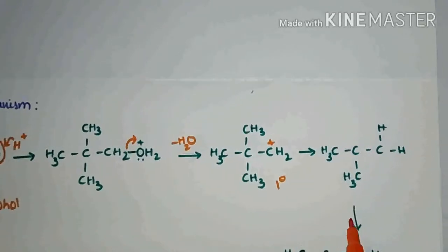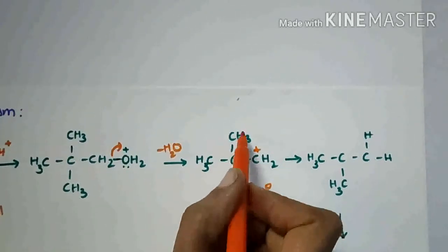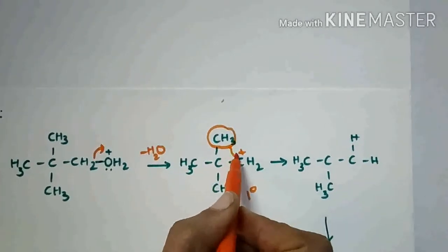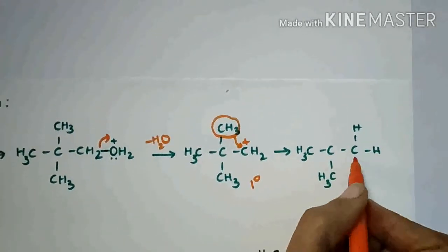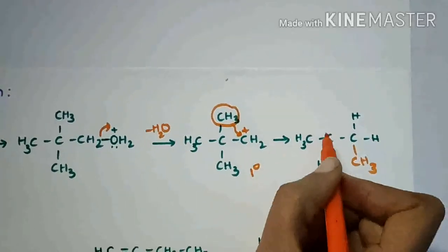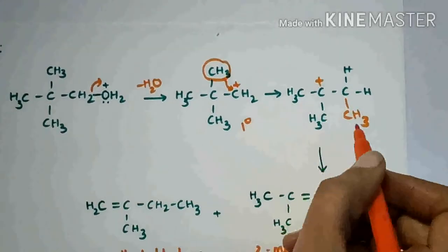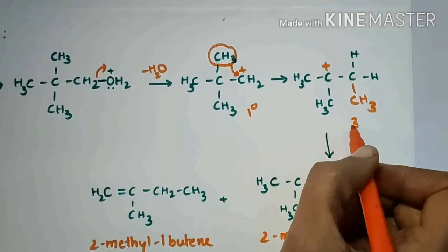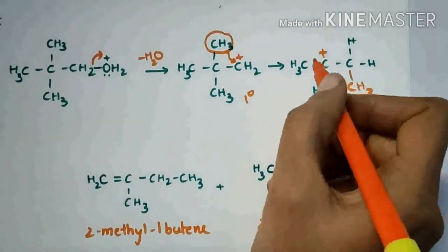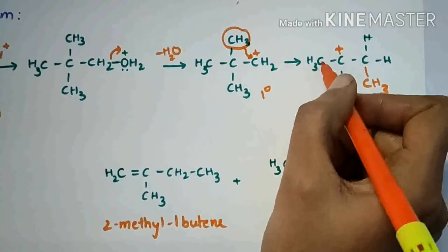The primary carbocation is unstable. So on this carbon, one of the methyl groups is transmigrated towards this carbon. It migrates towards this carbon and a positive charge is formed here. It is a tertiary carbocation, which is stable.